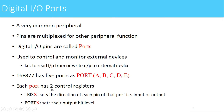Each port has 2 control registers with special functions. The first register is TRISX, where X indicates either A, B, C, D or E. The TRIS register is used to set the direction of a particular pin — either as an input pin or as an output pin. The second register is PORT X (port A, B, C, D or E), which is used to set the output bit level — it can be made 1 or 0 — and that status is directly reflected on the external port pin of the PIC controller.